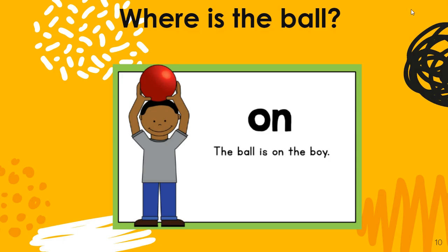Where is the ball? On. The ball is on the boy. Read it with me: The ball is on the boy. See how it's touching his head? When something is on something, it has to actually be touching it. So the ball is touching his head, which makes it on him.